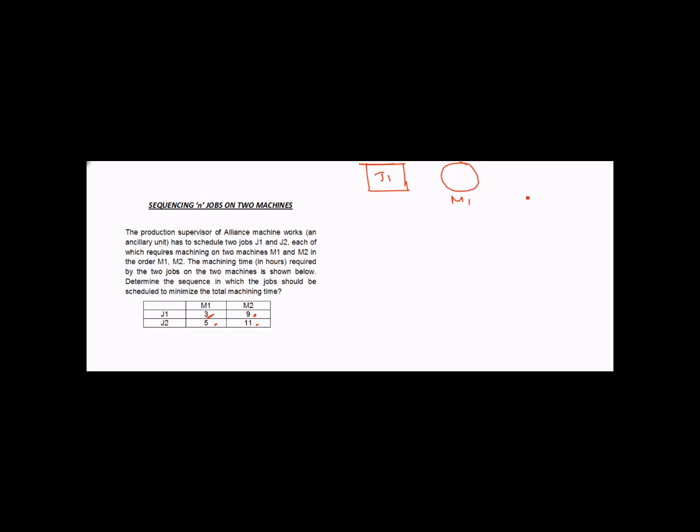What we need to determine is whether to process J2 first or J1 first. To understand the problem, consider that job J1 is to convert a metallic sheet in the form of a square into a ring. On machine M1 we will convert this square into a circular form, and then on machine M2 we will convert it into a ring format.